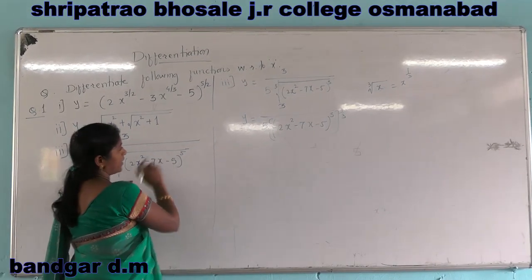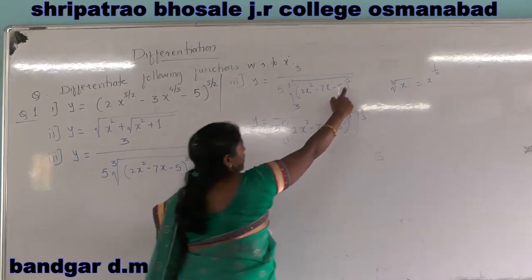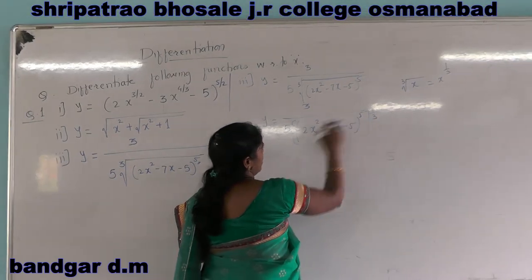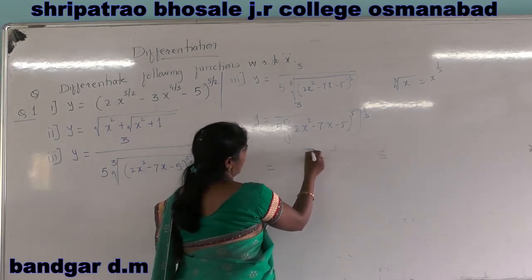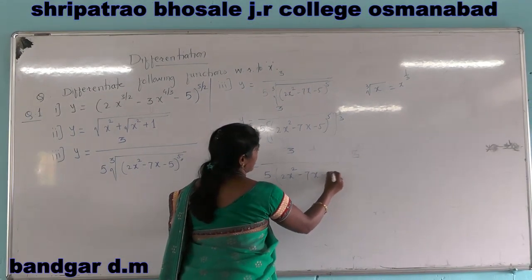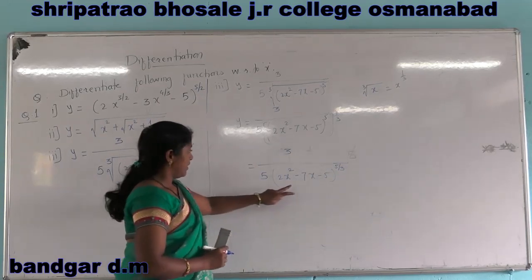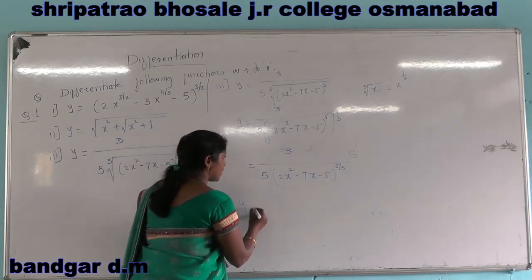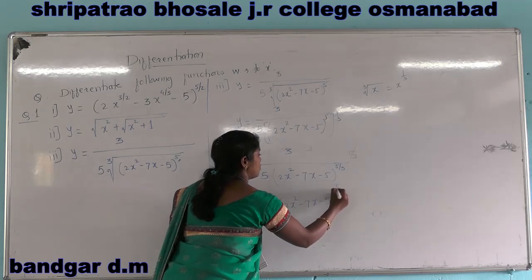Now this cube root has power 5 inside, so we write 3 upon 5 into 2x squared minus 7x minus 5 raised to 5 into 1 by 3, which gives power 5 by 3. And the denominator going to the numerator gives negative power, so it becomes minus 5 by 3. Therefore y equals 3 by 5 into 2x squared minus 7x minus 5, raised to minus 5 by 3.